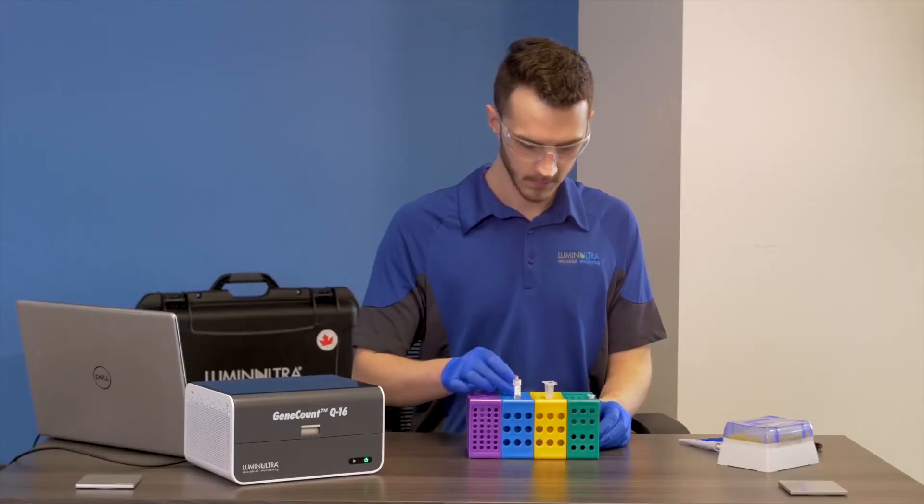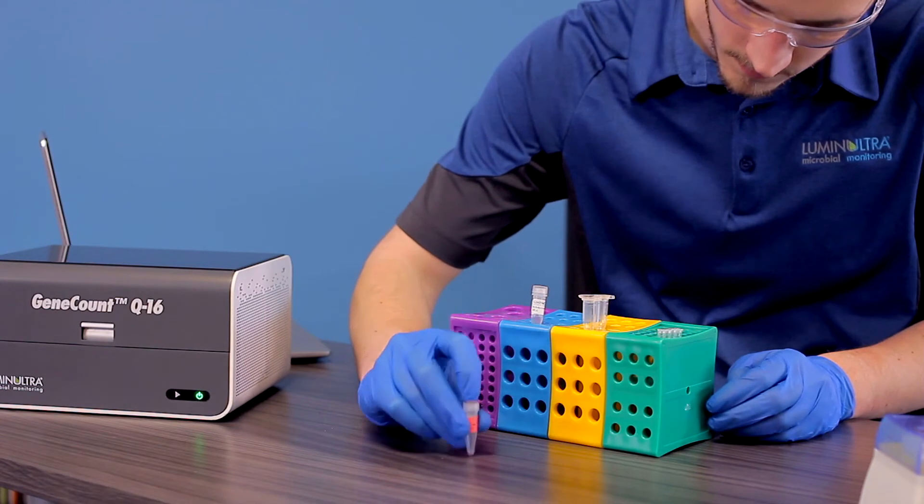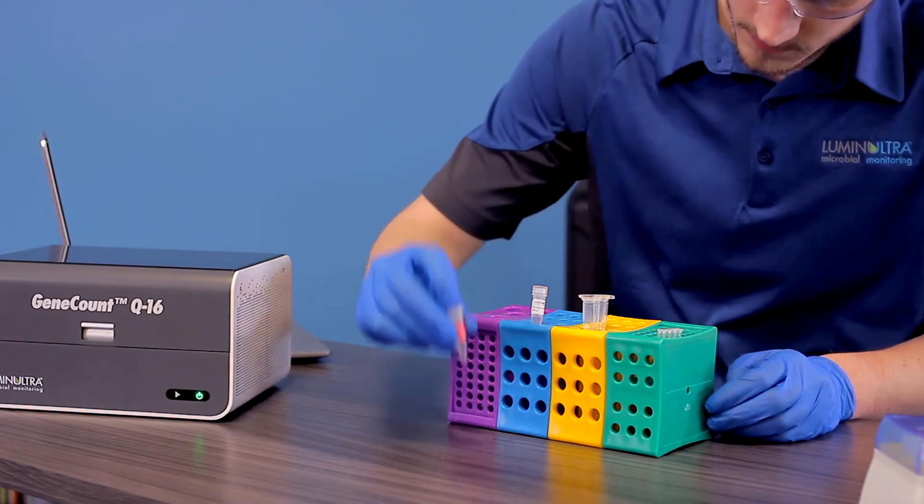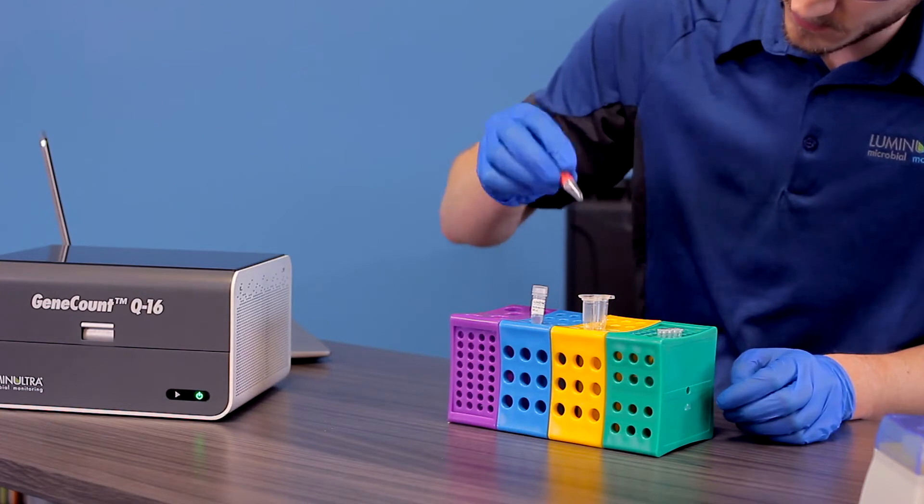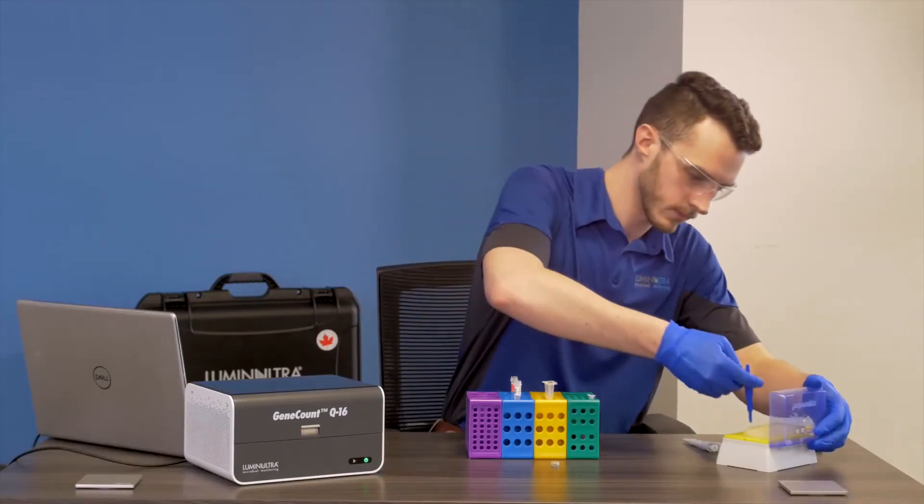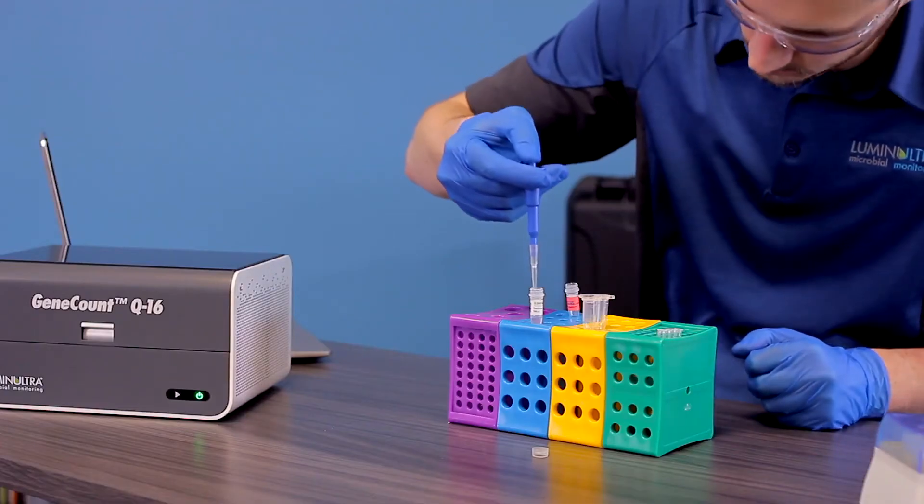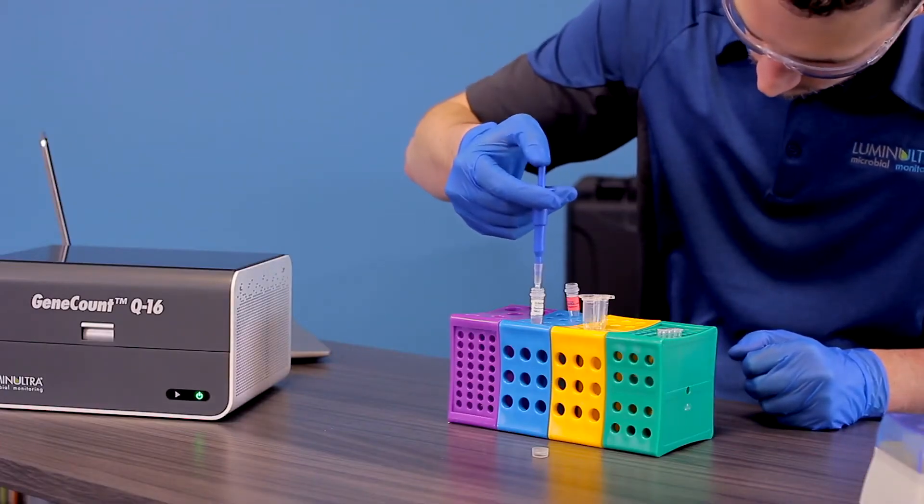Retrieve the positive controlled DNA tube and gently tap the bottom of the tube on the bench to collect the colored pellet to the bottom of the tube. The colored pellet is very small, so it may not be easily visible by eye. Using the fixed volume 100 microliter pipette, transfer 100 microliters of the nuclease-free water to the positive controlled DNA tube.